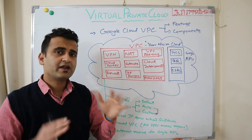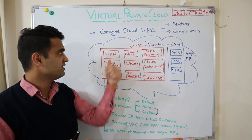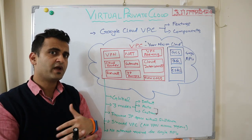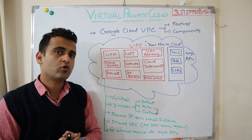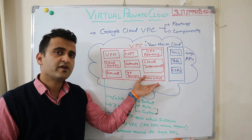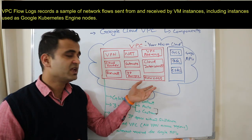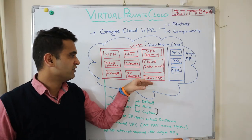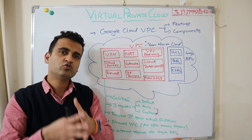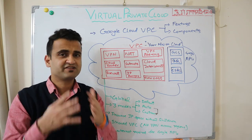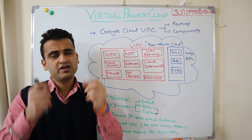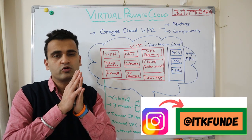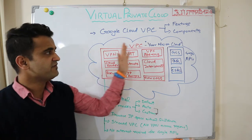If you are not happy with your VPN bandwidth and want more bandwidth, you should go for Cloud Interconnect. Flow Logs is very important — it enables monitoring on your overall VPC network. Once you enable Flow Logs, you will be able to see these logs in Stackdriver. Stackdriver is a product that is part of Google Cloud Platform for overall monitoring.